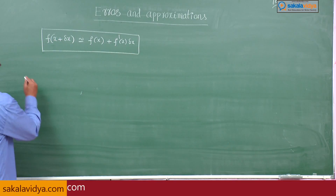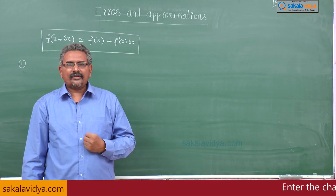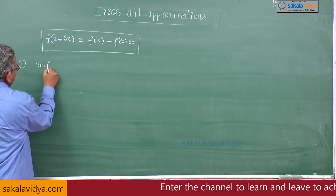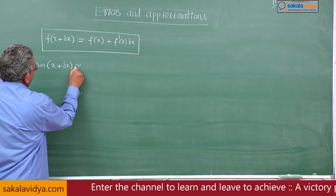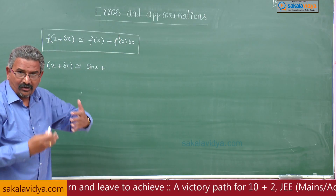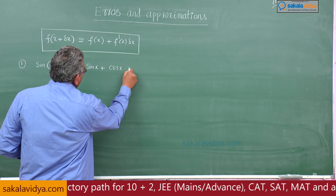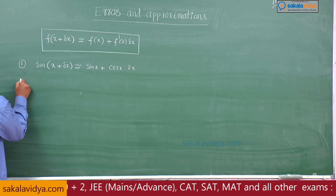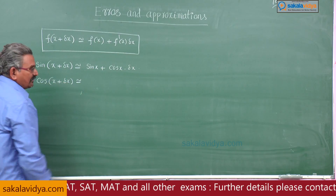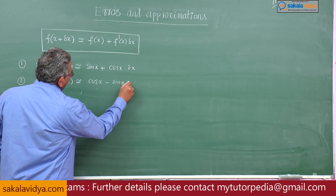First, suppose if you want to find out any approximate trigonometric values, either sin, cos, or tan. Suppose instead of f, write sin: sin of x plus delta x approximately equal to sin x plus cos x into delta x. What is the value of cos of x plus delta x? Approximately equal to cos x, and cos x derivative is minus sin x into delta x.